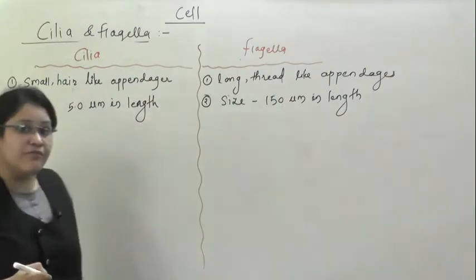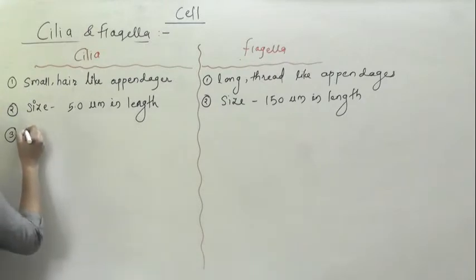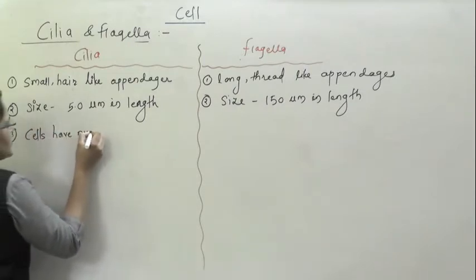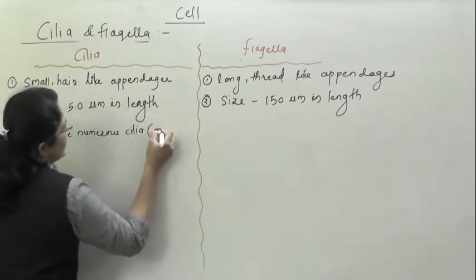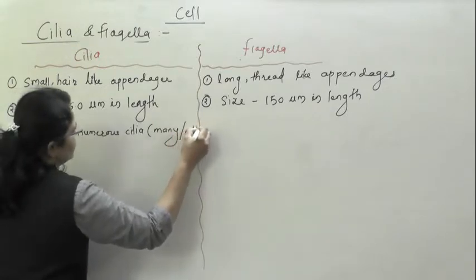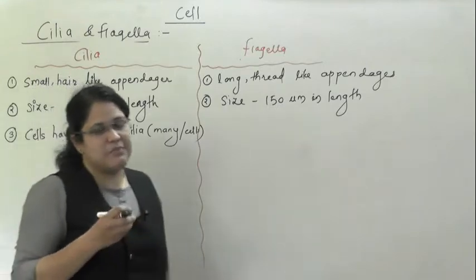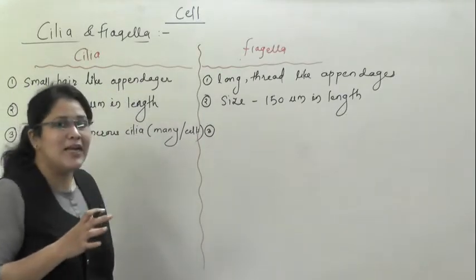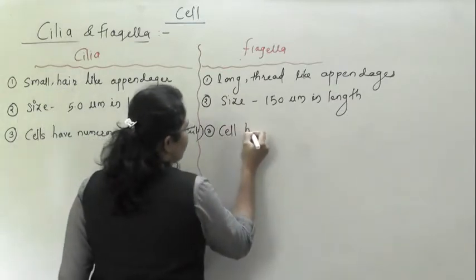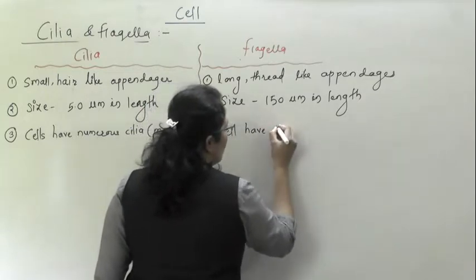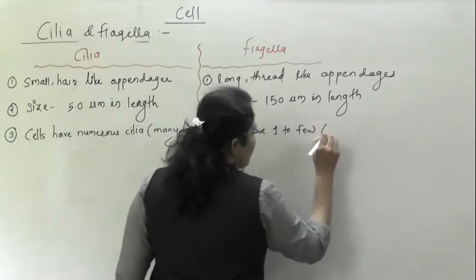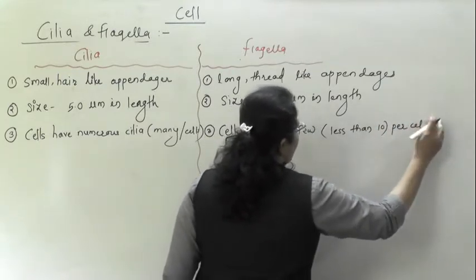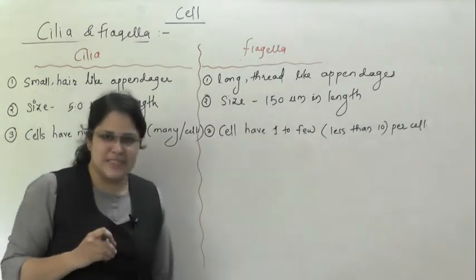Next difference is related to numbers. Cilia are numerous — cells may have many cilia per cell. Whereas flagella are limited in number, usually less than 10 per cell — cells have one to fewer than 10 flagella.